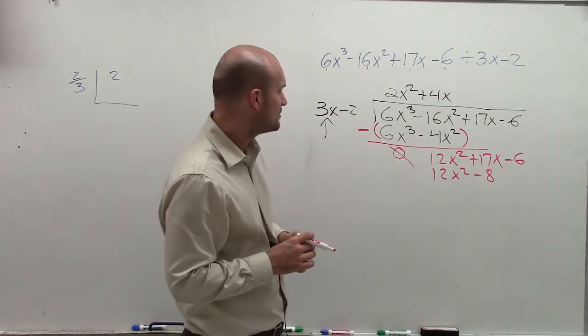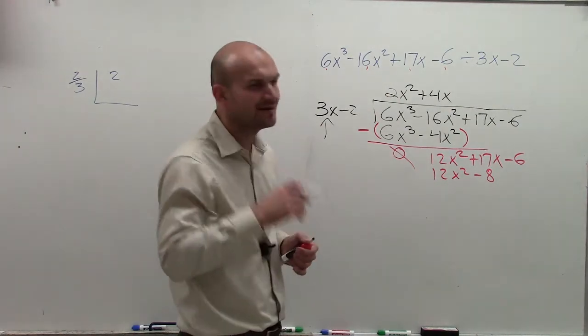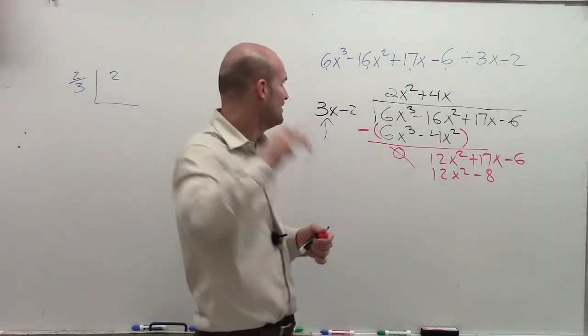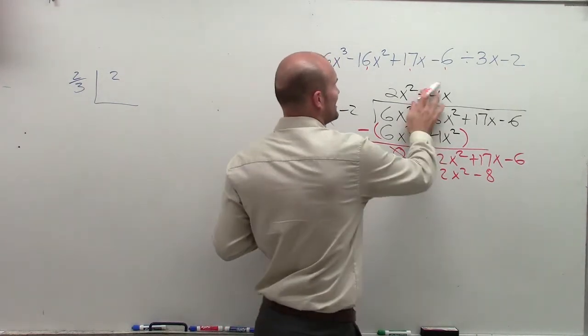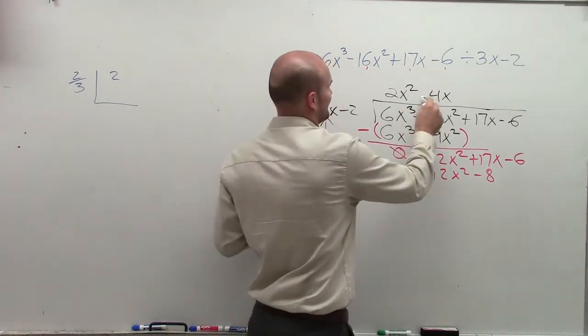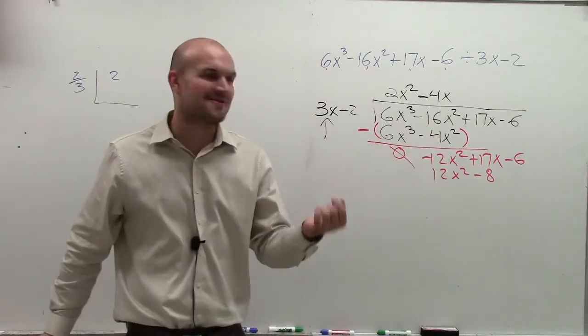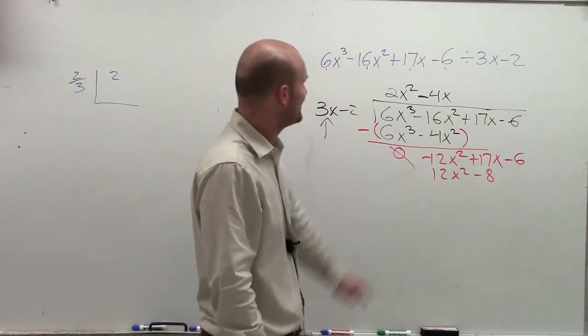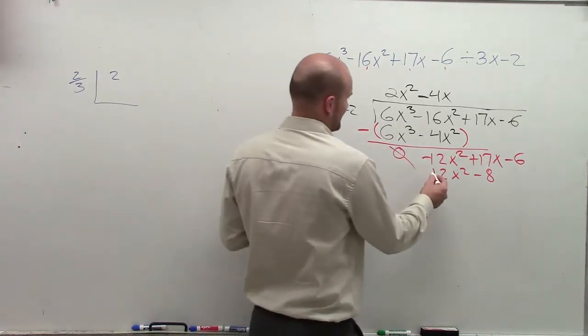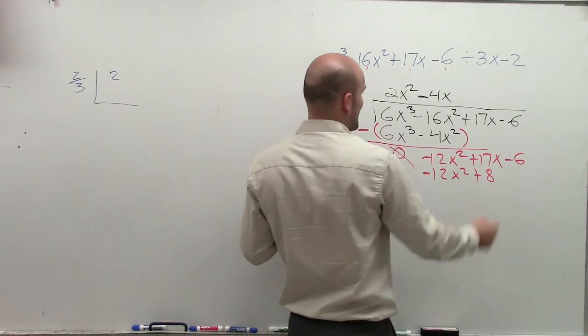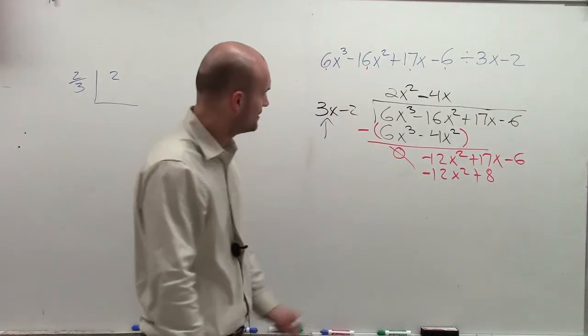And then negative 4x times negative 2 is going to be a positive 8. So that's negative 4. Negative 4 times 3x is a negative 12x, and negative 4 times negative 2 is going to be a positive 8.